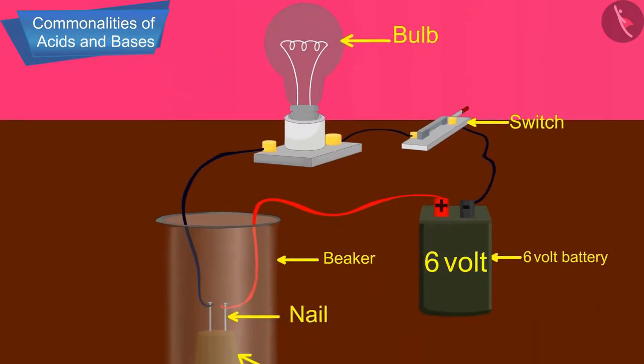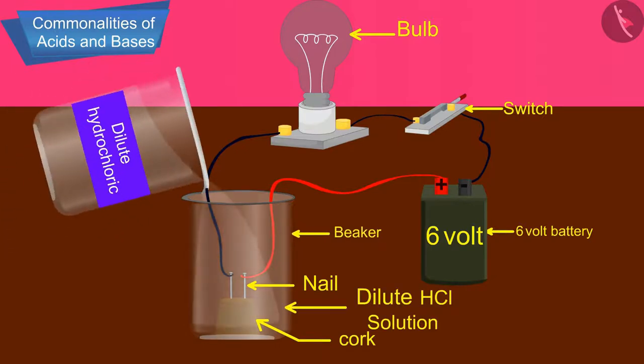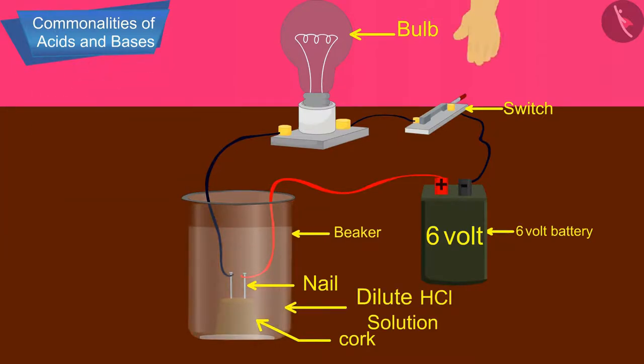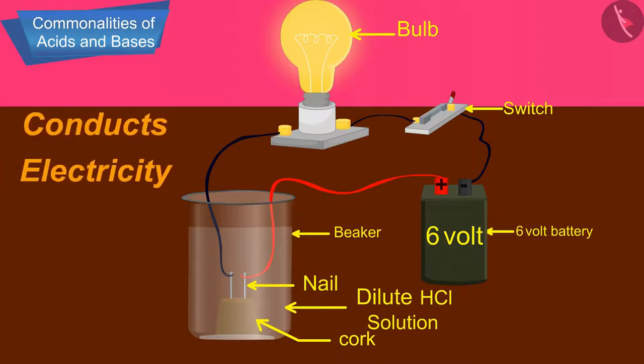Now pour some dilute hydrochloric acid in the beaker and switch on the current. What do you observe? The bulb starts glowing. This shows that hydrochloric acid solution taken in a beaker conducts electricity.